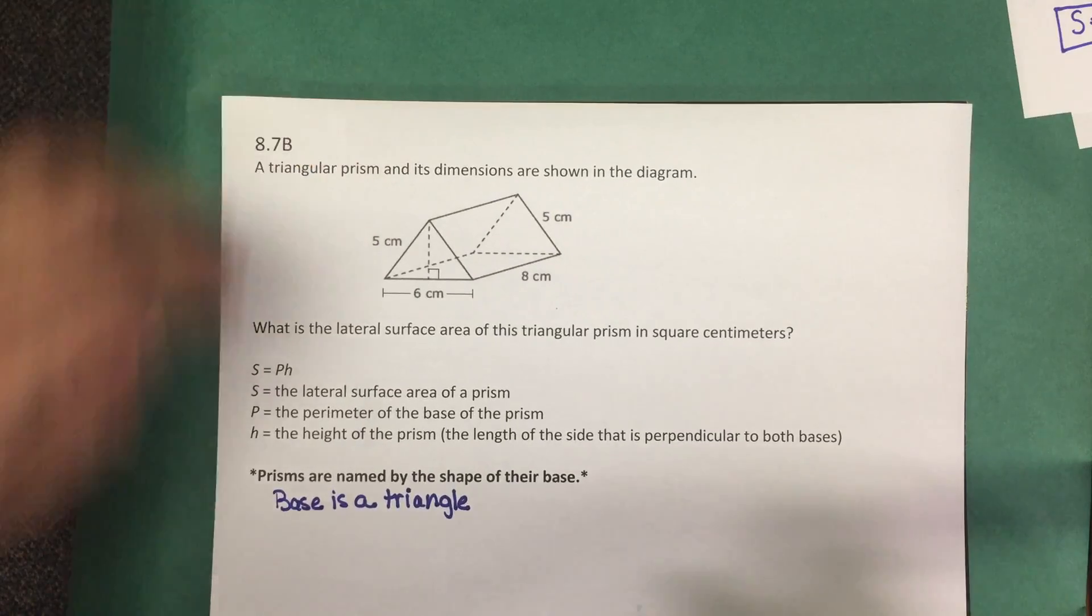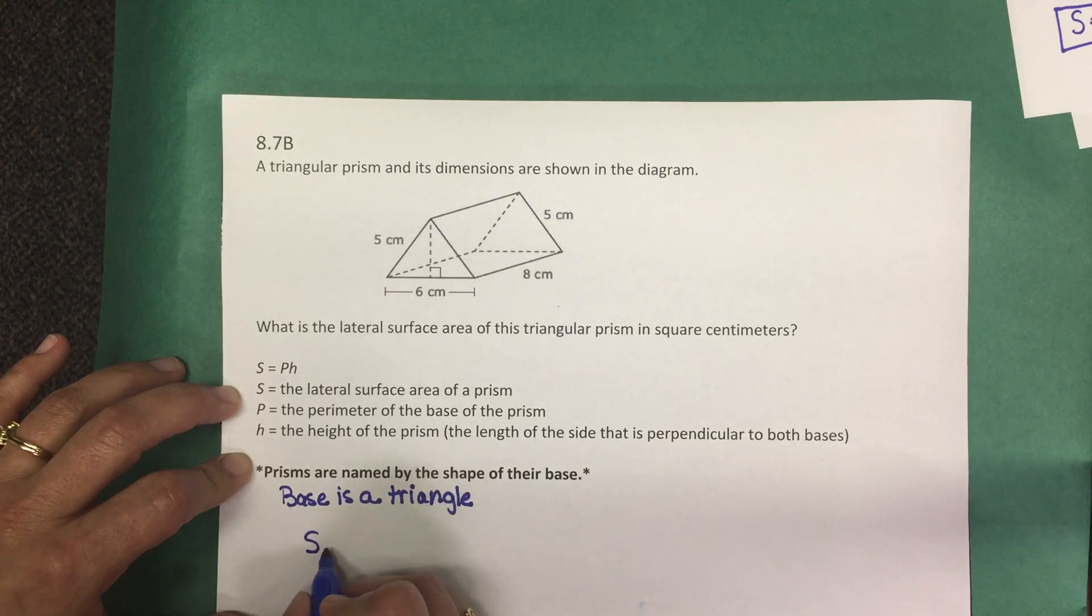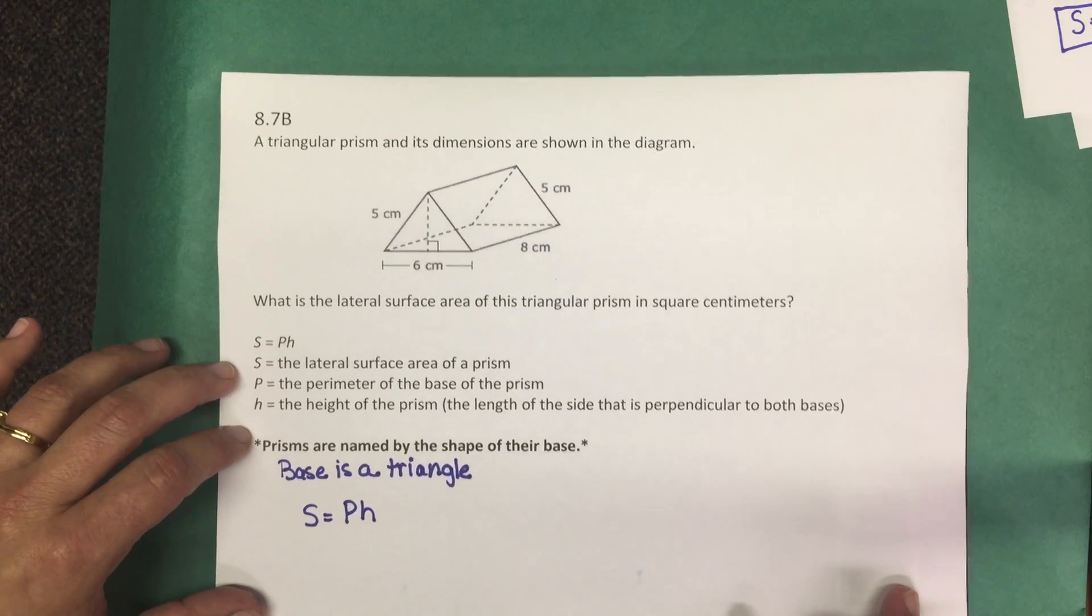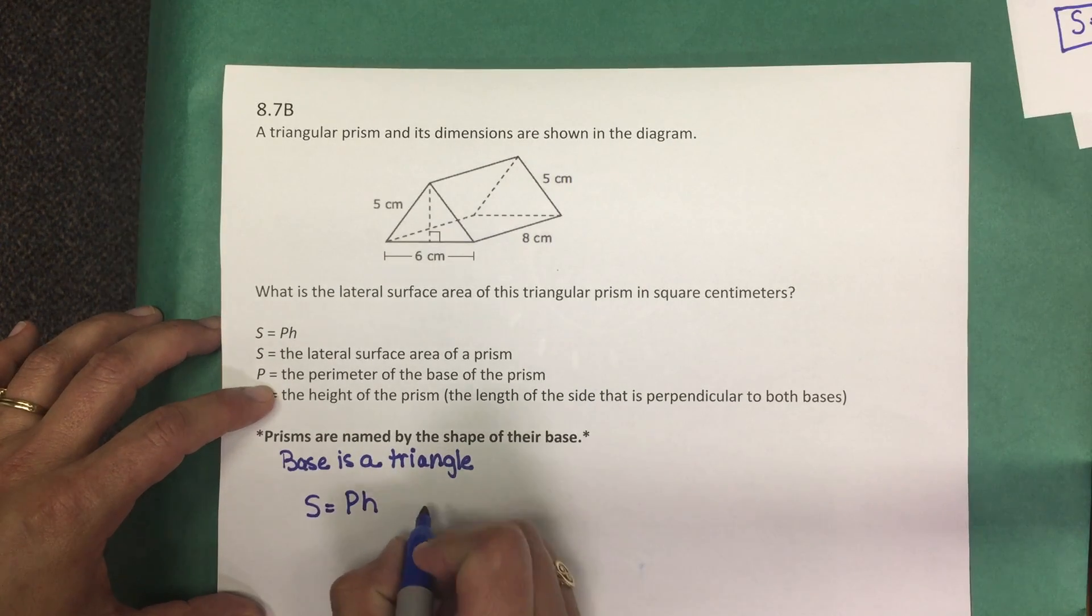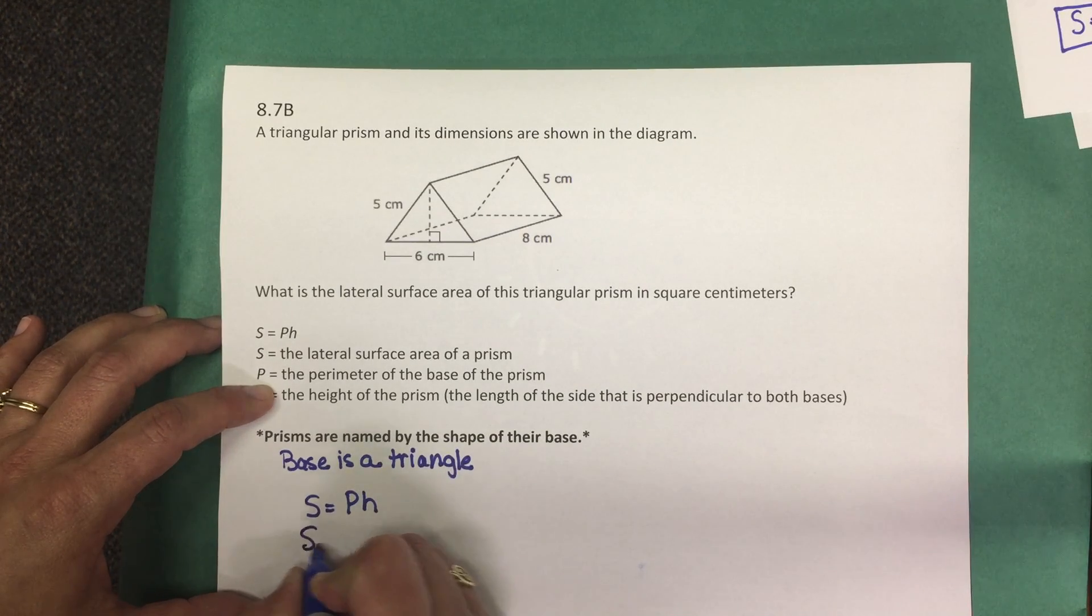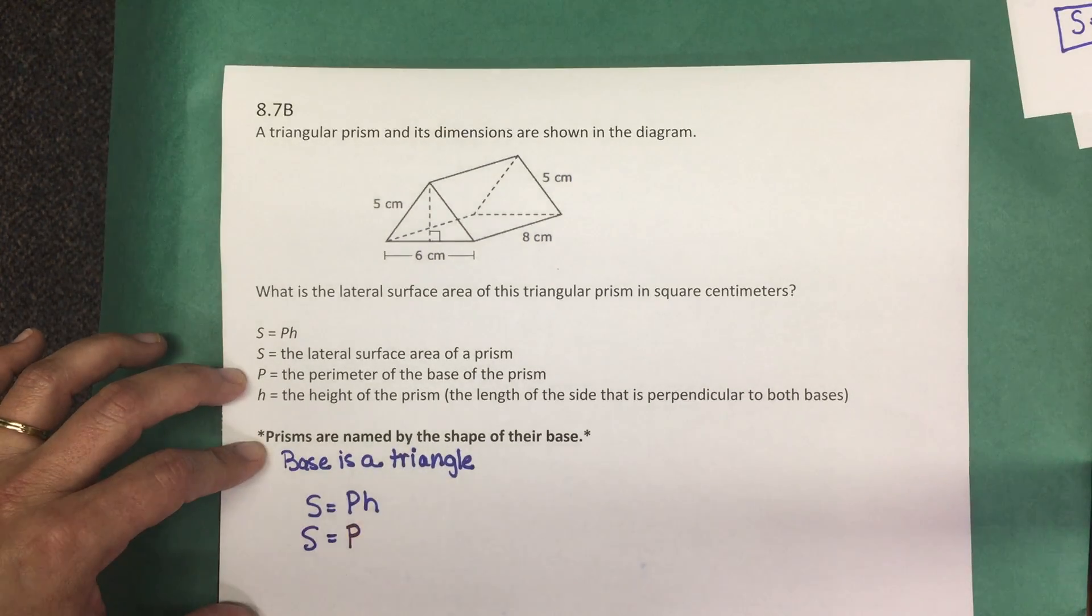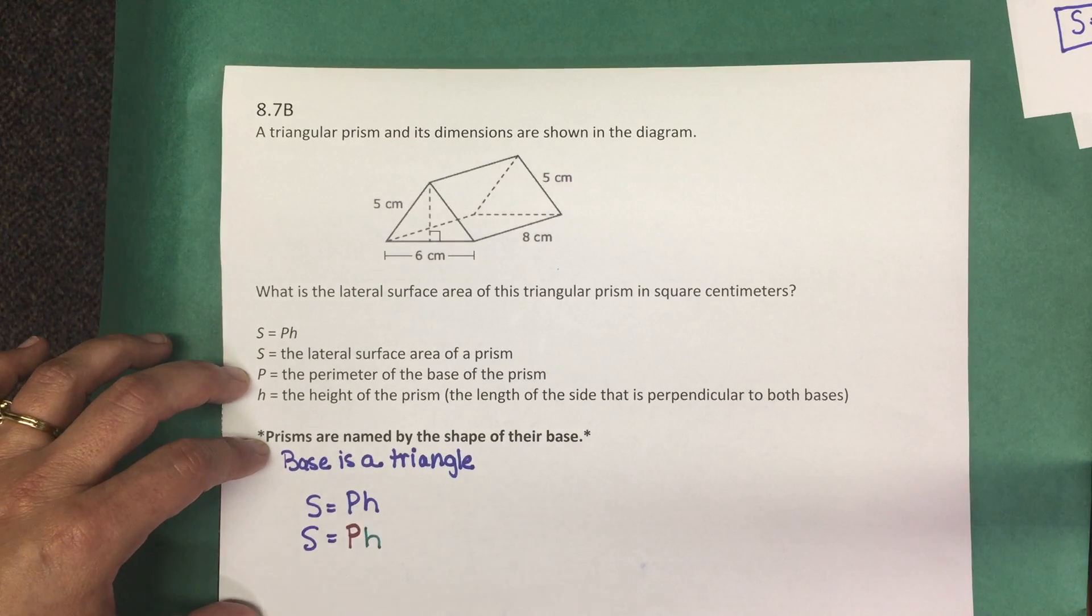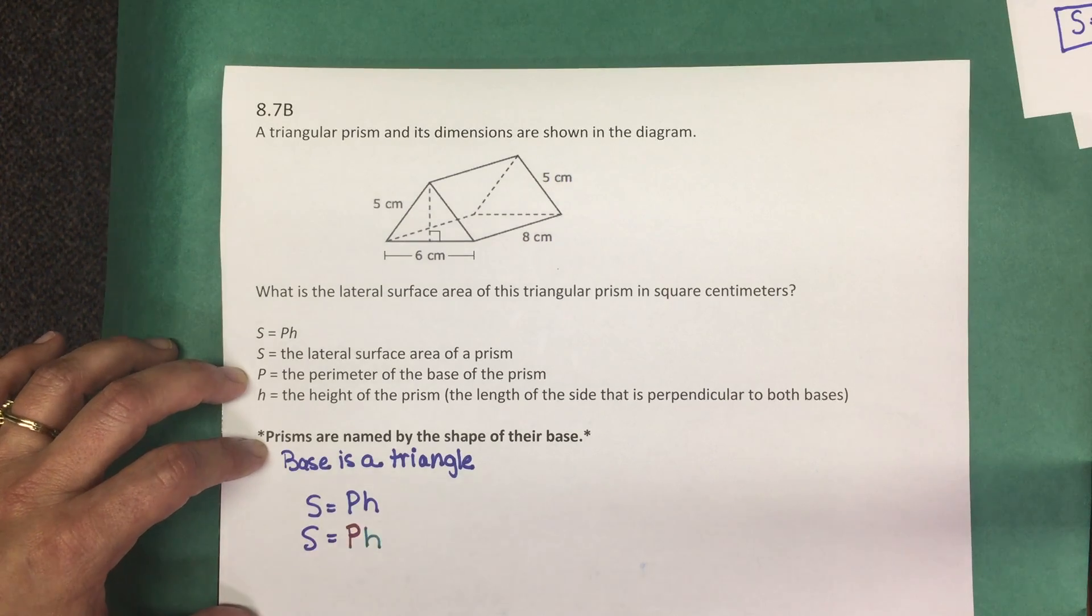Looking at this formula, S or the lateral surface area equals the perimeter of the base times the height of the prism. I'm going to actually use a little bit of color coding here. So let's rewrite this: S equals the perimeter of the base times the height. We're going to find the perimeter of the base and the height first and then substitute those values back in to determine the lateral surface area.